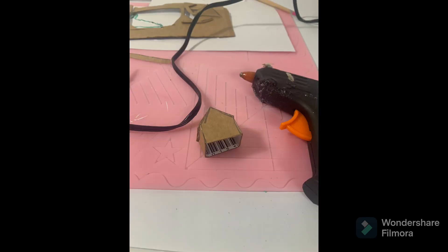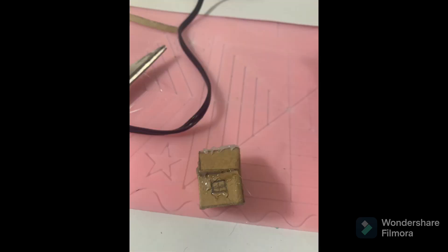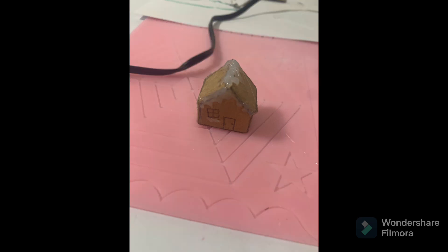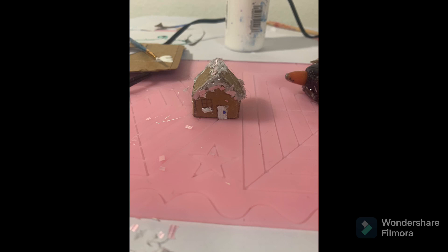Glue it to the back as shown, then you can decorate it, make more icicles, and paint it however you want. Then you've made your little teeny tiny gingerbread house. Bye!